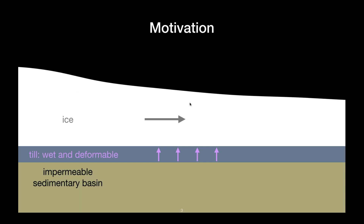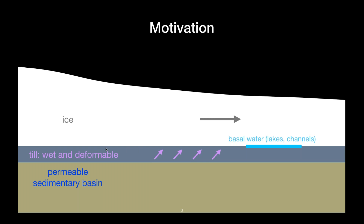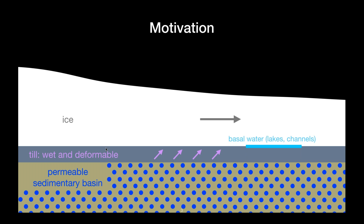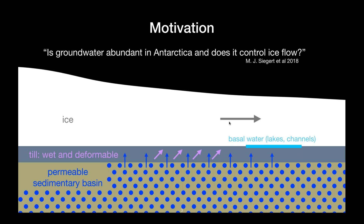To start, we'll look at a simple cross-section of Antarctica. Here I have ice sitting on top of a till layer, which is sitting on top of a sedimentary basin, which we will say is impermeable for now. This wet, deformable till layer can act to reduce friction at the base of the ice, allowing it to slide faster. Additionally, basal water in the form of lakes and channels is another hydrologic feature that can modulate ice flow. Traditionally it's been thought that the water in this system is generated from melt at the base of the ice, but it's also been suggested that the sedimentary basin is actually permeable and filled with groundwater, which can interact with the till layer and further contribute to the flow of ice. The question that has been posed is: is groundwater abundant in Antarctica and does it control ice flow?